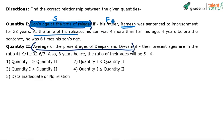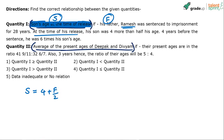At the time of release, the father was F years old and the son was S years old. The question says that at the time of release, his son was 4 more than half the father's age. So the first equation is: S equals 4 plus F divided by 2. That's the first equation — half the father's age plus 4.